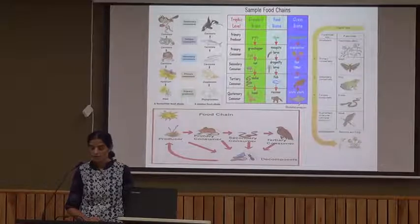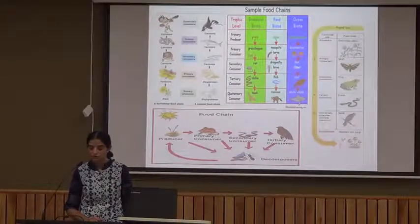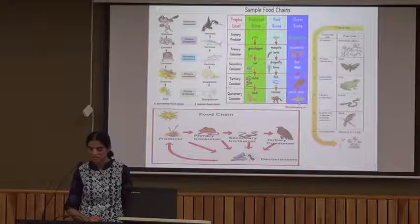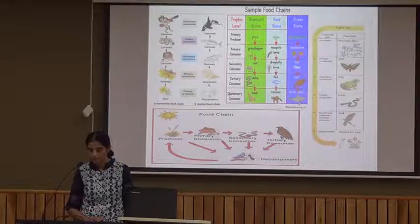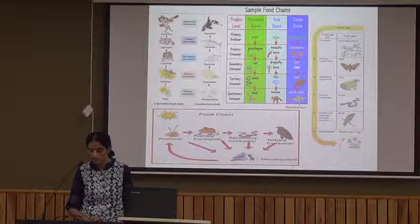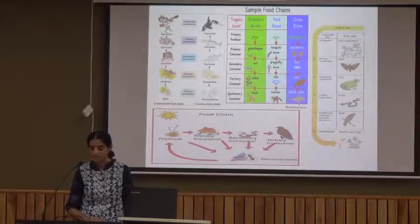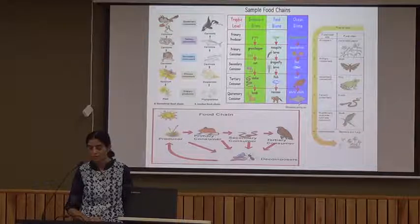These are samples of other food chains existing in the environment. A food chain basically consists of a producer, primary consumer, secondary consumer, tertiary consumer, and then decomposers. These different levels in the food chain are called trophic levels.